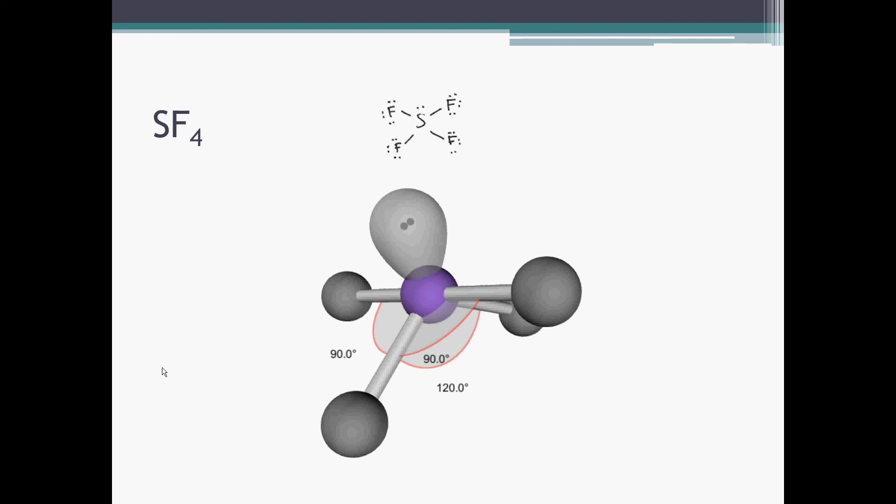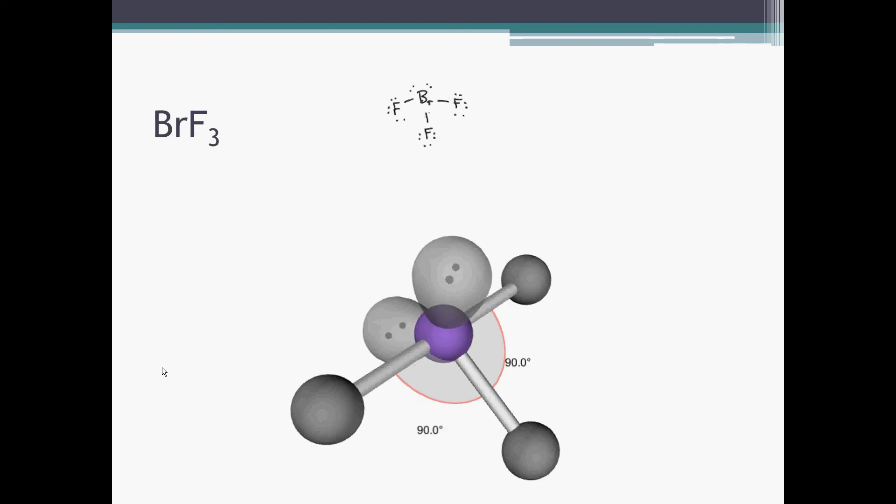If we have a second non-bonding domain, like bromine trifluoride here, we can see the two non-bonding pairs leave the other three atoms looking an awful lot like a T with 90 degrees between them. The non-bonding pairs are in plane, and so we get a T-shape here.